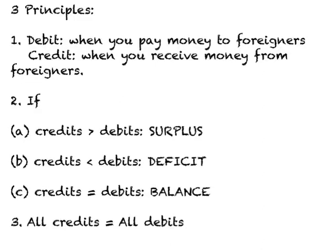If credits are greater than debits — that is, you're receiving more money from foreigners relative to what you are paying them — you will have a surplus. If credits are less than debits, you will have a deficit. If credits equal debits, the account is in balance. The third principle is that in the final analysis, when you sum up all credits and all debits, all credits must equal all debits. Remember these three principles.